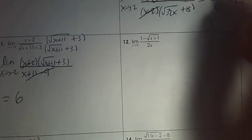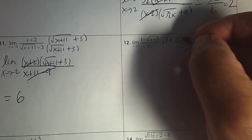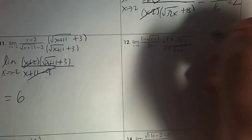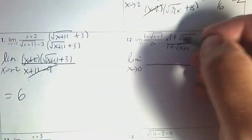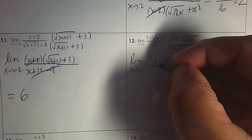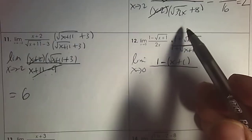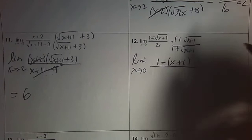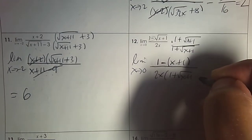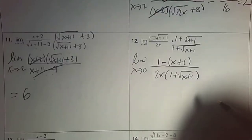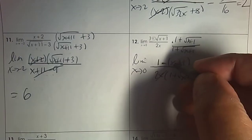Step 1 again: plug in 0, and you get 0 over 0. Next step is to do the conjugate: that's 1 plus the square root of x plus 1, top and bottom. Write down the limit as x approaches 0. The numerator, multiply out: 1 times 1, and then root x plus 1 times root x plus 1 gives negative with parentheses x plus 1. So be careful — that subtract sign belongs to the x and to the 1. The denominator, write down beside each other.